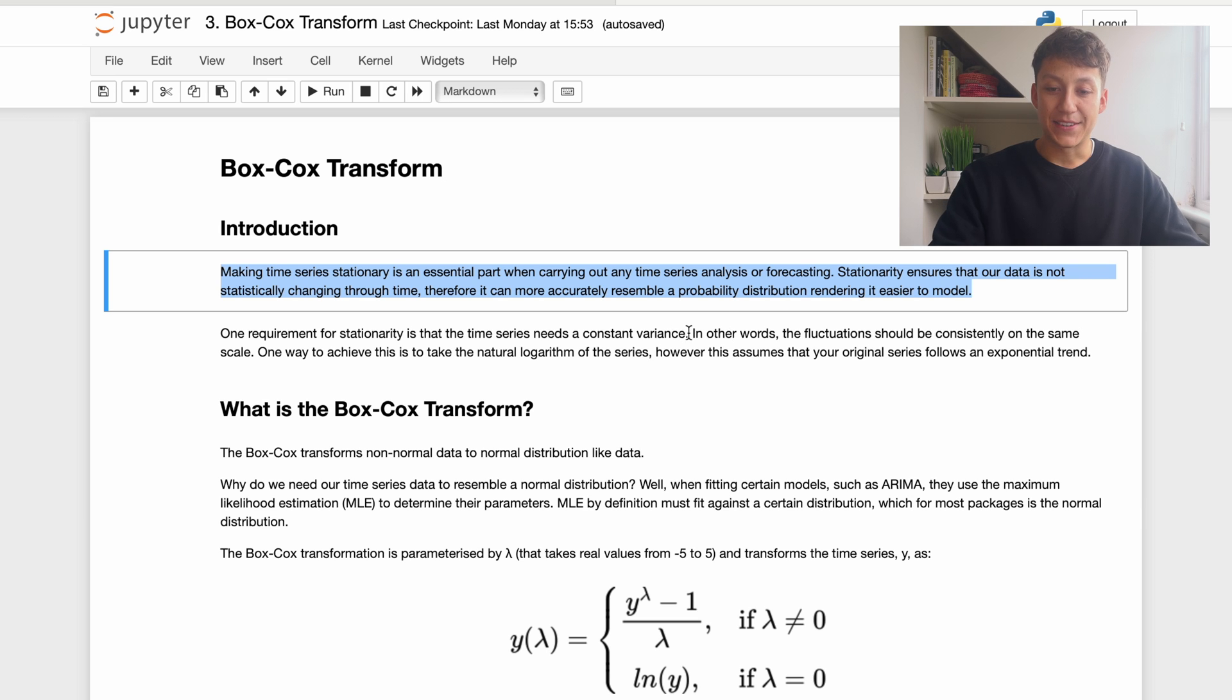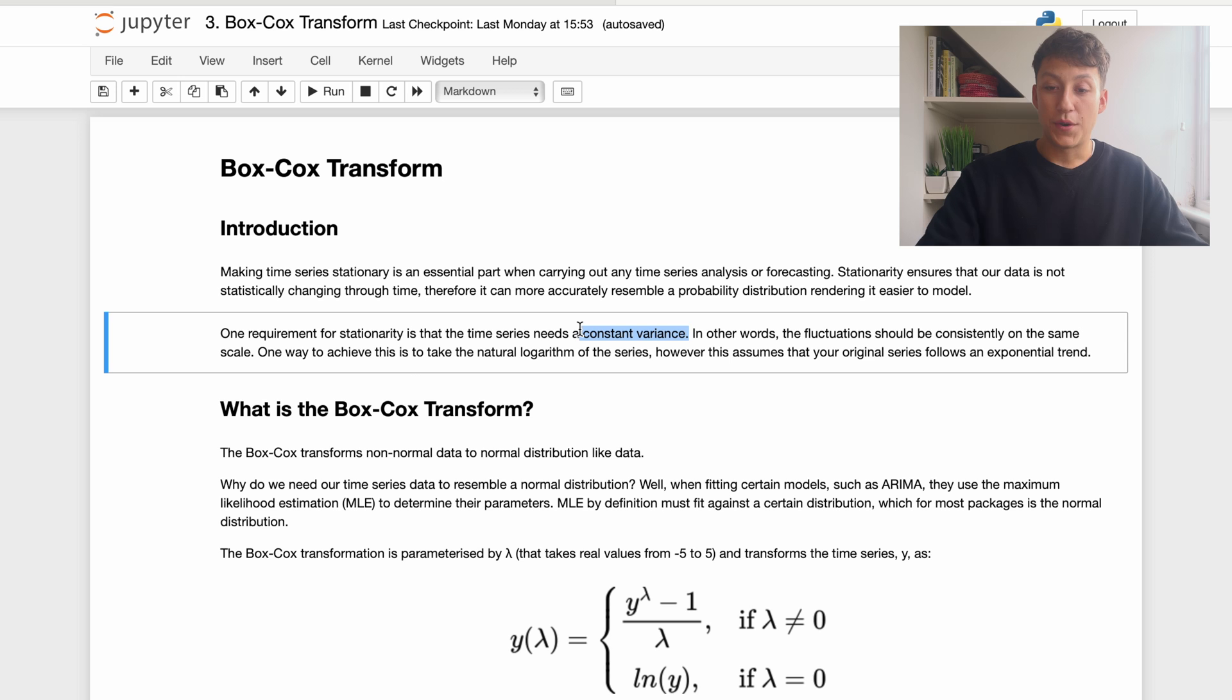One requirement for stationarity is that our data needs to have a constant variance, and what this means is that the fluctuations, as I've written here, are on a consistent and similar scale year on year or day to day, whatever kind of time scale our time is indexed at. One way to achieve this is taking a natural logarithm, which we did in a previous video. However, this makes a big assumption which is normally fairly correct: that our data follows an exponential trend. This is not necessarily true, as we will show in the next section.